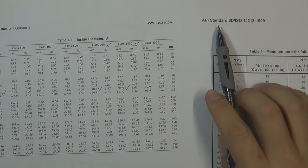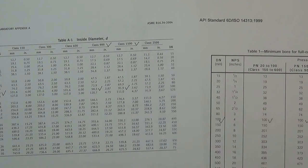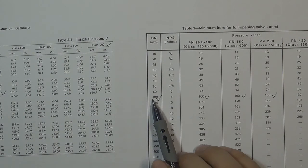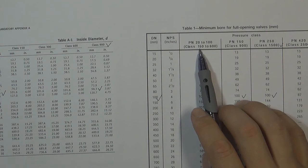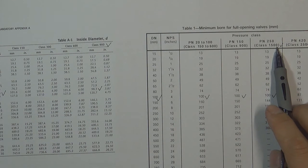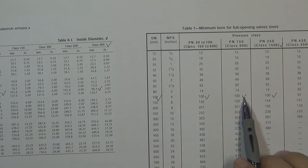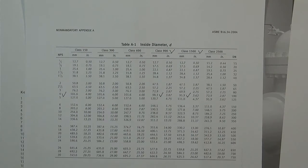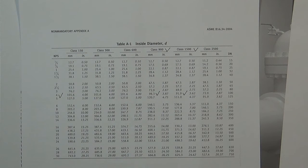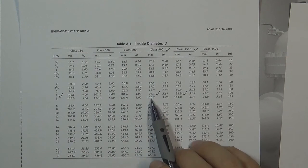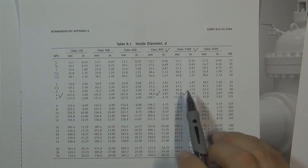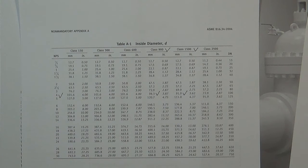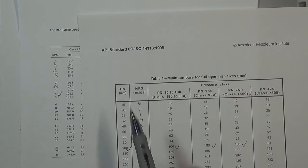I also compared the API 6D inside diameter table and the ASME B16.34 inside diameter table. API 6D valves are bigger than ASME B16.34 valves. For example, for DN100, 4-inch size, from Class 150 through Class 1500, the inside diameter does not change in API 6D. But in ASME B16.34, for the 4-inch valve, from Class 900 the inside diameter is already reduced, and by Class 1500 it is reduced a lot.